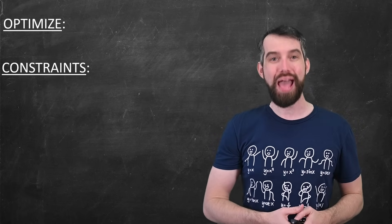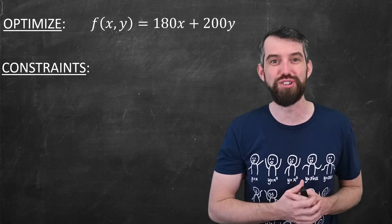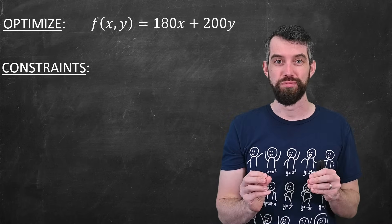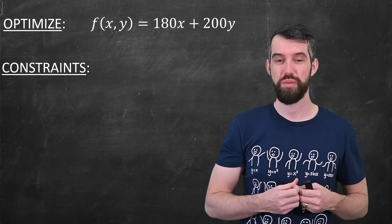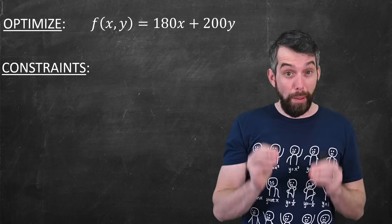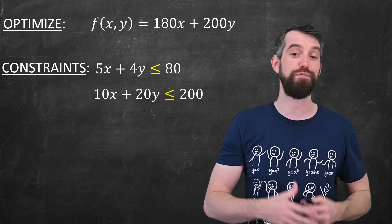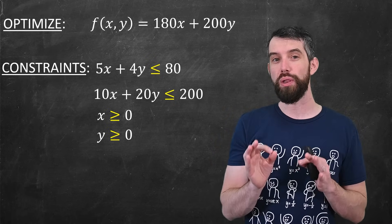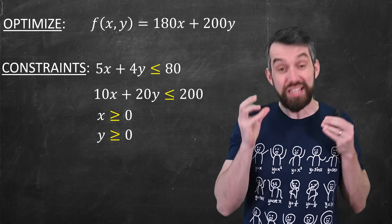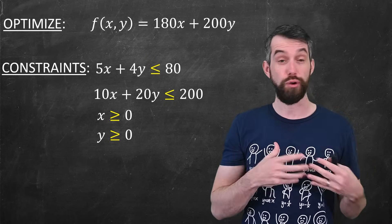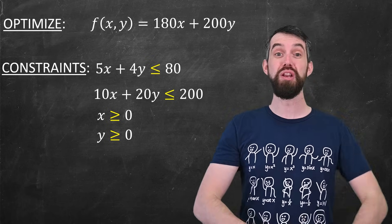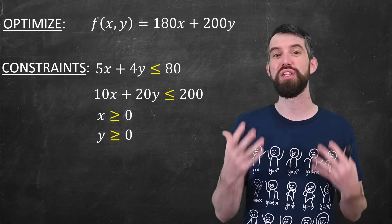What I'm imagining is I want to optimize the value of some function like 180x plus 200y — something like that. This is a linear function of multiple different variables, say x and y. Optimize could mean find the maximum or it could mean find the minimum. But we're not just optimizing this function by itself; we're optimizing it subject to various constraints — a series of what we call linear inequalities. Things like 5x plus 4y is less than or equal to 80, or 10x plus 10y is less than or equal to 200, or x is positive, or y is positive. There's no x squared or sine of x. So this is the idea of linear programming: optimizing a linear function subject to a list of linear constraints.